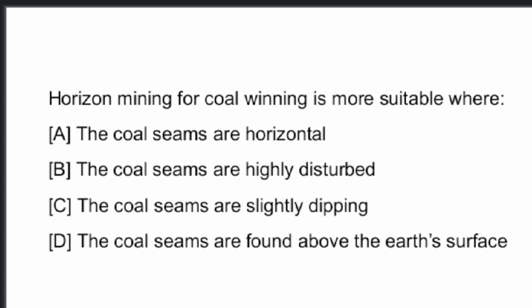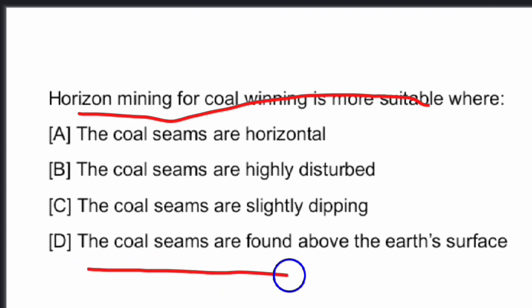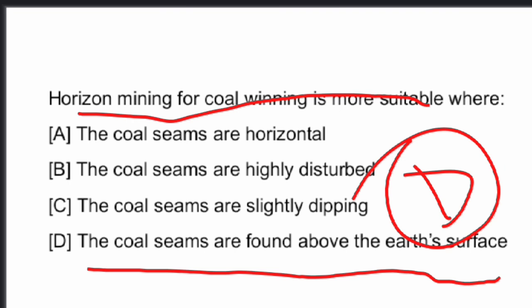First question: Horizon mining for coal winning is more suitable where? The answer is: the coal seams are found above the earth's surface. Option D is the right answer.